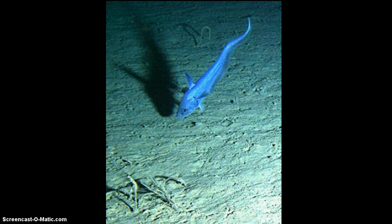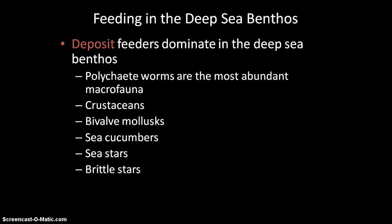This picture shows what the seafloor looks like — really fine, silty sediment, flat for the most part. Deposit feeders are actually the most dominant form of feeders in the deep sea, because everything falls to the bottom and stays there. Deposit feeders either go around picking stuff up or they eat the dirt itself. Types of deposit feeders include polychaete worms, crustaceans, bivalve mollusks, sea cucumbers, sea stars, brittle stars, and sea urchins.